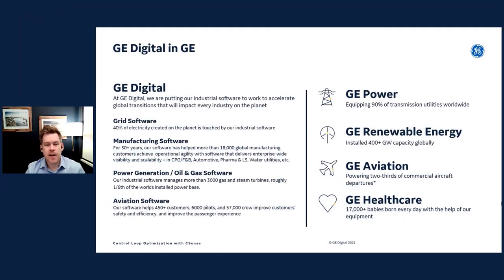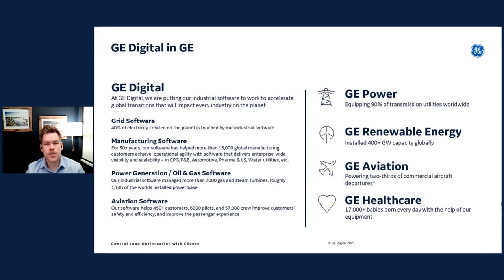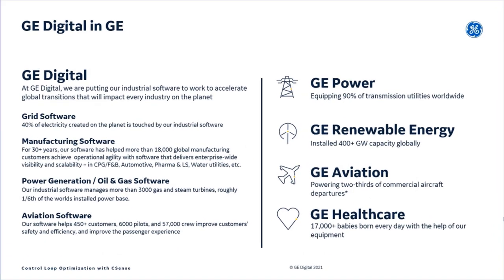GE Digital is one of five businesses at GE. We focus on developing world-class industrial software for our customers, as well as supporting GE power, renewable energy, aviation and healthcare. Our purpose is to transform how our customers solve their toughest challenges by putting industrial data to work. What unites GE Digital is our vision — we bring simplicity, speed and scale to our customers' digital transformation with software that helps them to better operate, analyze and optimize their business processes. I'm excited to hand you over to Kobus, who'll take you through the latest updates for Prophecy CSense.